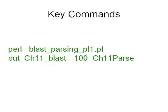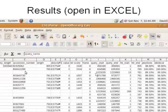The key command syntax looks like this: Pearl, the program which is blast_parsing_pearl.1, the name of the output file from BLAST — in this case called out_chromosome11_blast — telling it to return only 100 hits, and then naming the new file chromosome11_parse. When I open up chromosome11_parse, this is what I get.